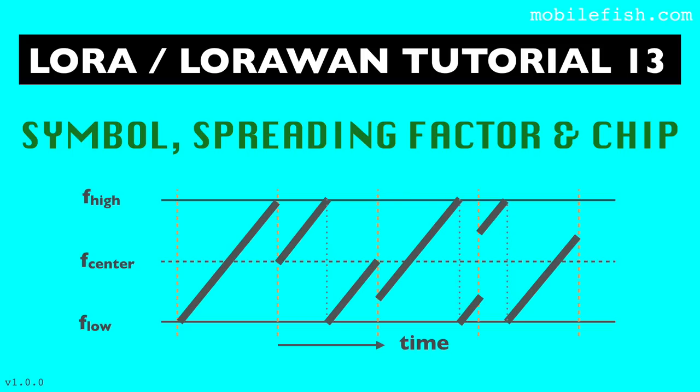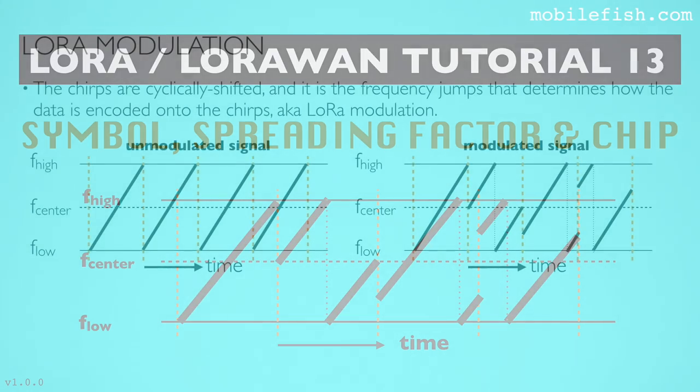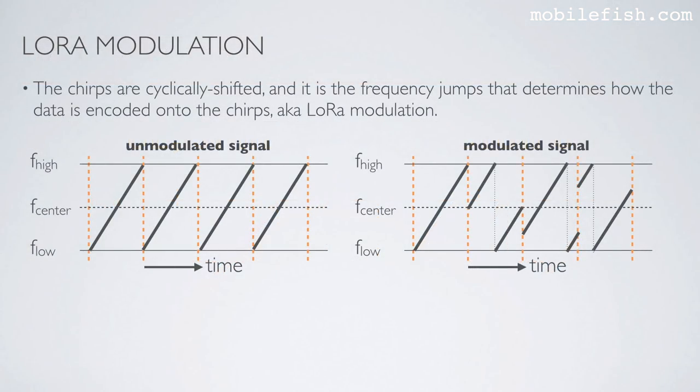In this tutorial I will explain what symbols, spreading factors, and chips are. The chirps are cyclically shifted and it is the frequency jumps that determines how the data is encoded onto the chirps, aka LoRa modulation.